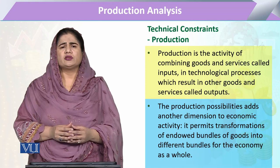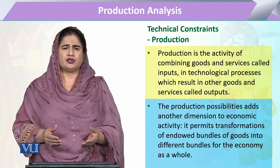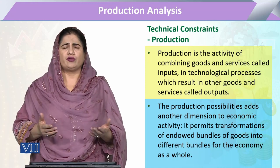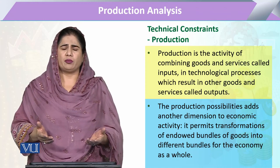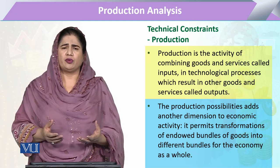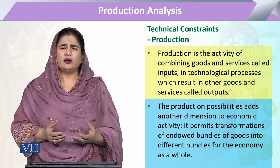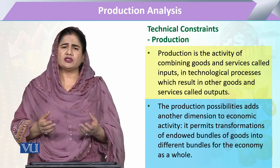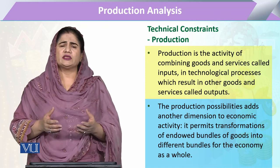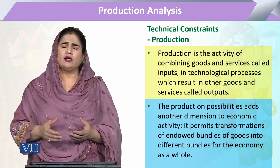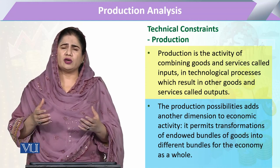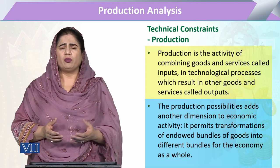This production process involves the utilization of goods, utilization of services, utilization of technology, and all other such forms. Any transformation that includes a combination of goods and services in such a way that it leads to another product or a certain output — that will be a production process.